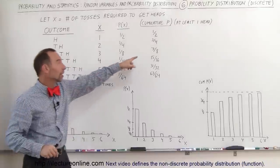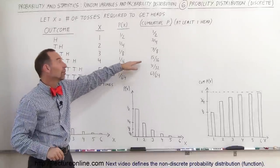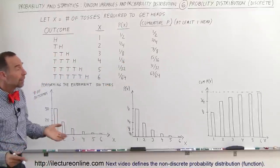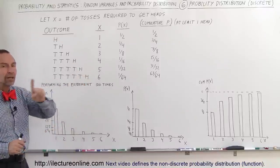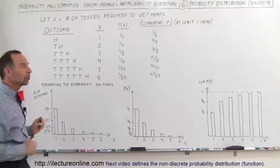There's 7 eighths probability you'll get it on three tries. There is 15 sixteenths probability you'll get at least one head on four tries, and so forth. The reason why I put that column there will be evident when we start looking at the graphs here.